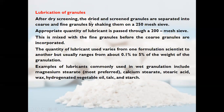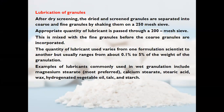After dry screening, the dried and screened granules are separated into coarse and fine granules by shaking on a 250 mesh sieve. The appropriate quantity of lubricant is passed through a 200 mesh sieve and mixed with the fine granules before the coarse granules are incorporated. The quantity of lubricant used usually ranges from about 0.1% to 5% of the weight of the granulation. Common lubricants used in wet granulation include magnesium stearate, calcium stearate, stearic acid, hydrogenated vegetable oil, talc, and starch; magnesium stearate is the most preferred lubricant.